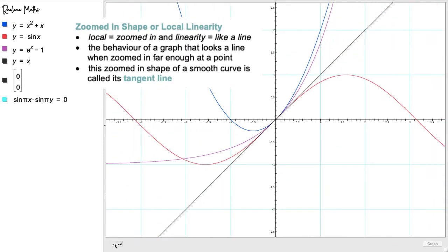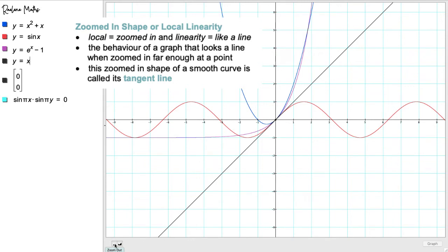These three curves are locally linear at the point (0,0), because when we zoom in far enough at that point, each graph looks like a line.